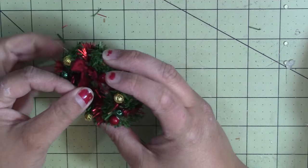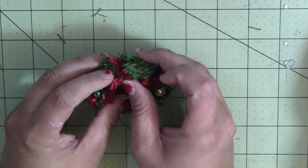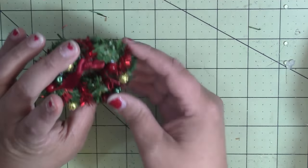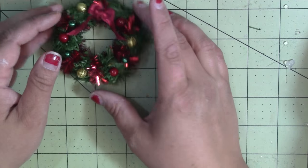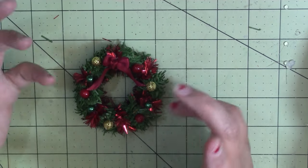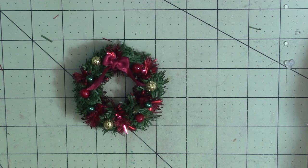So that is a cute little wreath that you could do so much with. You could even make it like a napkin ring. You could do anything with them. That is my video for today. Thanks for stopping by. I'll see you guys next time.